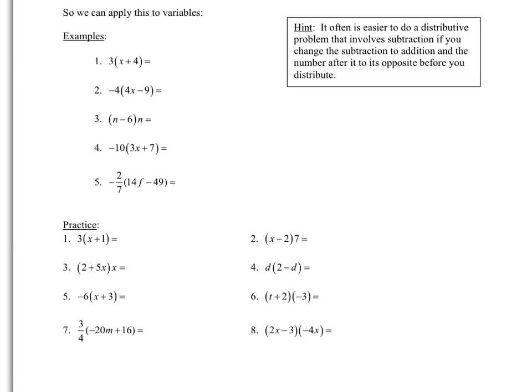We're going to take this 3 and multiply it into each number inside the parentheses. So 3 times x gives us 3x, and 3 times 4 gives us 12. We put a plus in between because there's a plus between the two numbers. A helpful hint: it's often easier when doing distributive property with subtraction to change the subtraction to addition and the number after it to its opposite before you distribute.